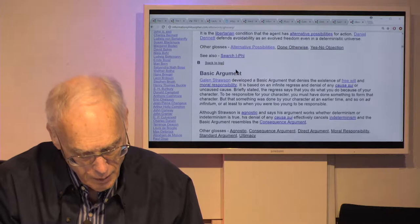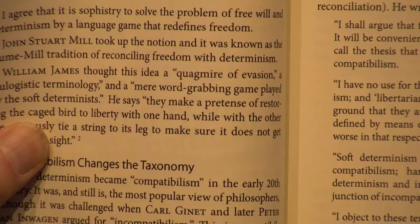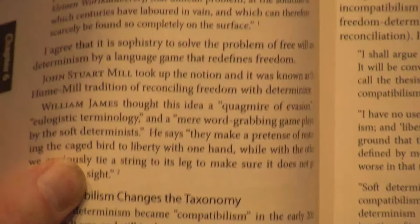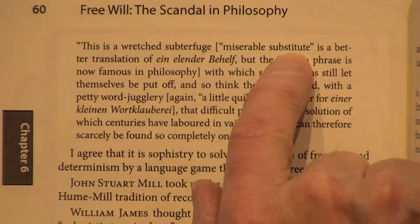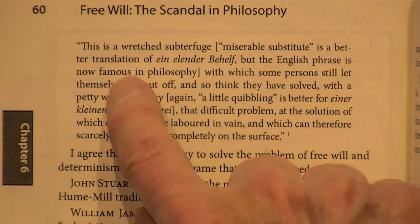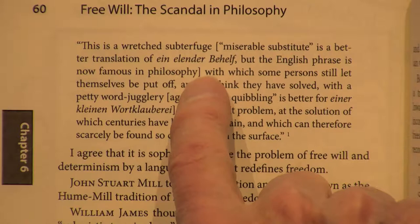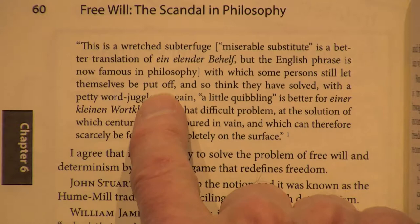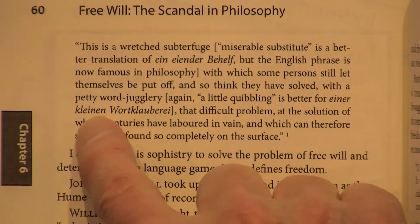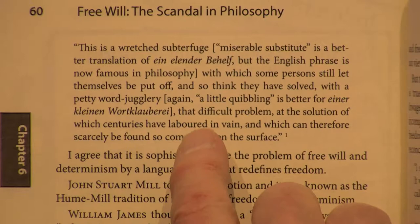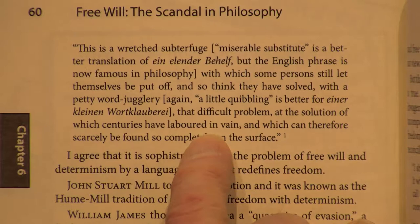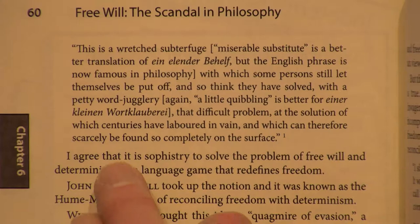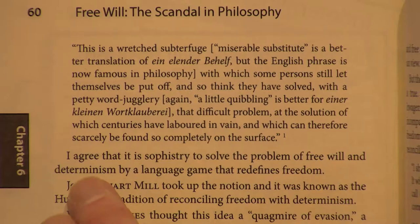Kant then developed a wonderful phrase about this: he said it is a 'wretched subterfuge' — a miserable substitute — 'with which some persons still let themselves be put off, and so think they have solved with a petty word jugglery' — in German, a klein Wortklobberei, word clobbering — 'that difficult problem at the solution of which centuries have labored in vain.' I agree we're talking about sophistry used to solve the problem of free will by a language game that redefines freedom.